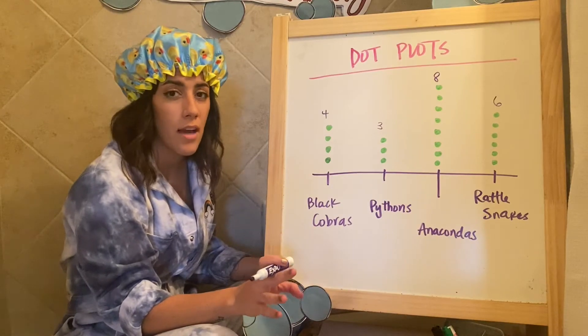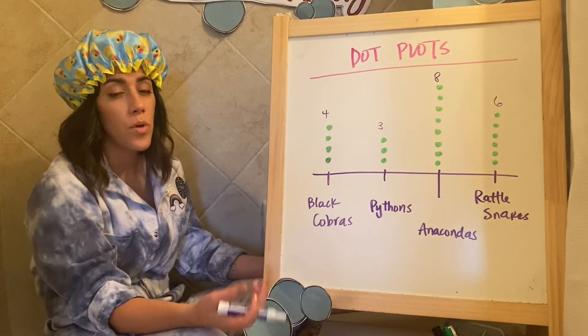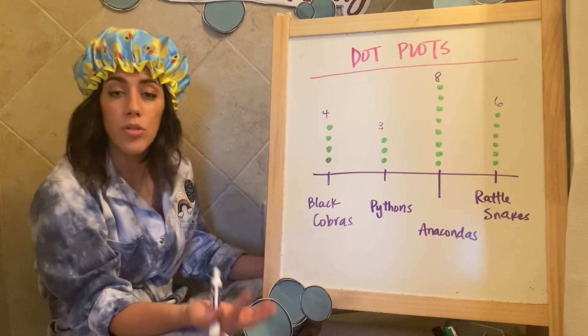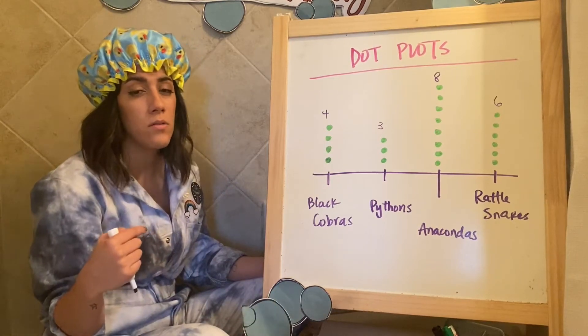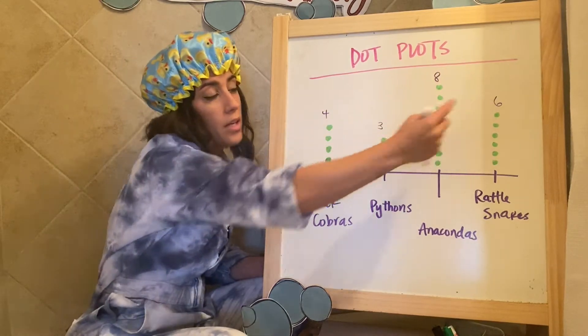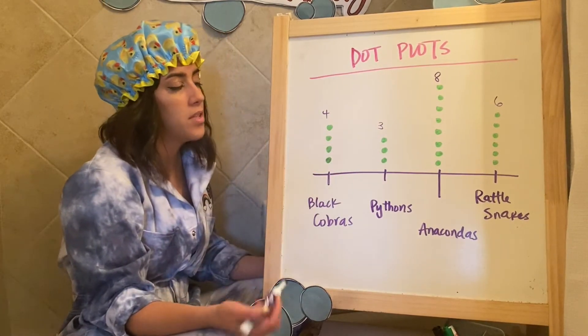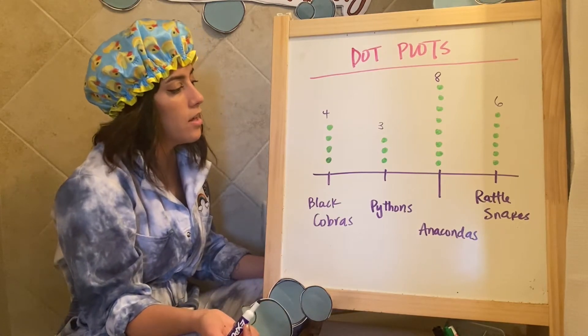So just by writing that down, making your little annotations or notes, is super helpful in when you get questions. So if you get, if you do get a question, that's like how many anacondas and rattlesnakes total, if you make a mistake counting those dots, you can always double check by actually just like doing the math, standard algorithm or another way that another strategy you might have up your sleeve.